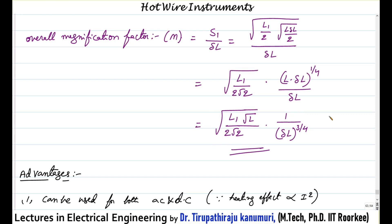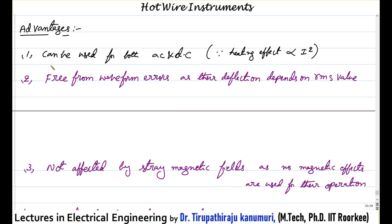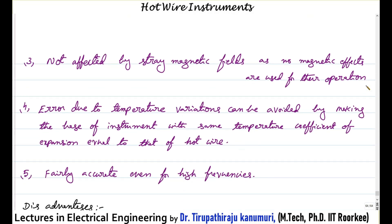Because of this entire arrangement, the small delta L is magnified so many times that we get a huge displacement in the pointer, allowing measurement of even the smallest change in current. Advantages: it can be used for both AC and DC since heating effect is proportional to current square; it is free from waveform errors as deflection depends on RMS value only; and it is not affected by stray magnetic fields because there is no magnetic effect in the operation of this instrument.